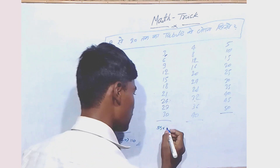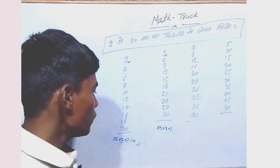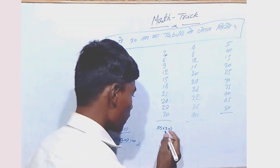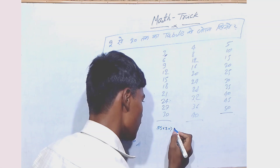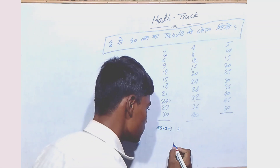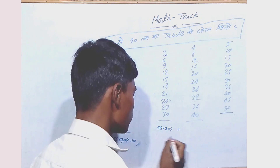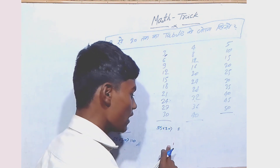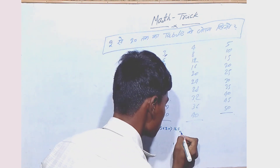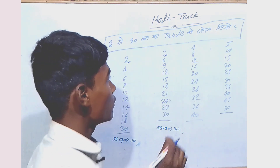And after that, you will write here 3. Then you will again multiply. 5 times 3 is 15, and carry is 1. Again you will multiply: 5 times 3 is 15, and 1 carry makes 16. So the answer has come — 165. This is the answer.